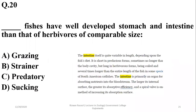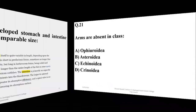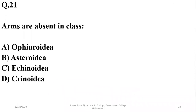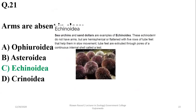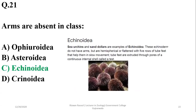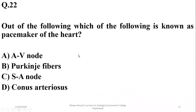Question 20: Fishes that have a more well-developed stomach and intestine than those of herbivores of comparable size are grazing fishes, which have well-developed intestines and stomachs. Question 21: Arms are absent in class Echinoidea. Sand dollars and sea urchins are members of class Echinoidea. Question 22: The pacemaker of the heart is the sinoatrial node — option C.